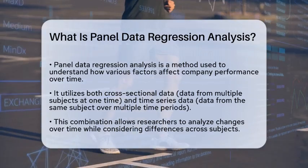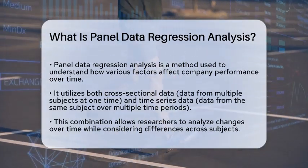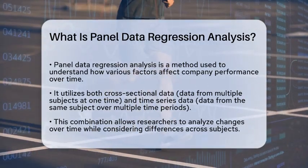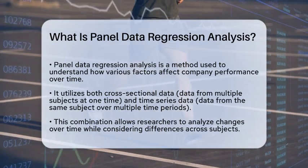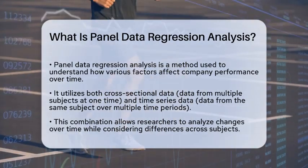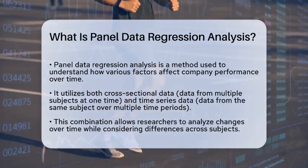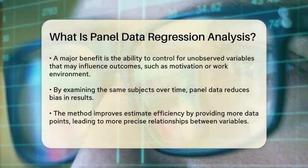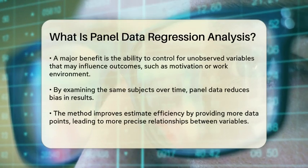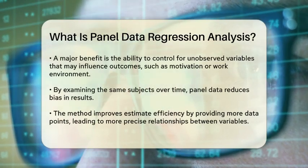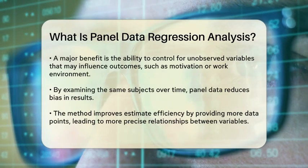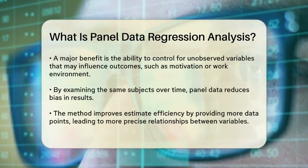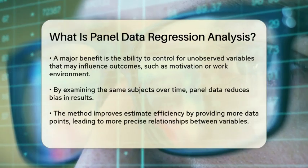Panel data regression analysis is a statistical technique that combines both cross-sectional data and time series data. Cross-sectional data refers to observations collected at a single point in time across multiple subjects, such as different companies or individuals. Time series data, on the other hand, involves observations collected over multiple time periods for the same subject. By integrating these two types of data, panel data regression allows researchers to analyze changes over time while also considering variations across different subjects.